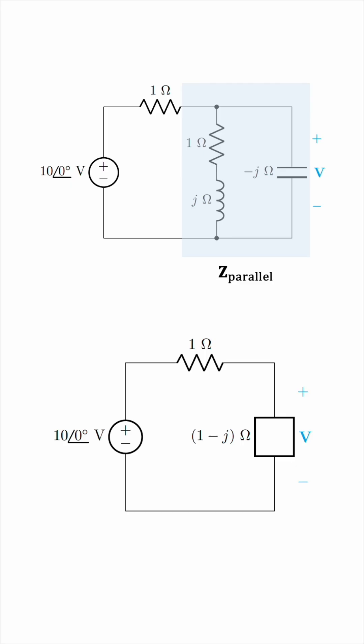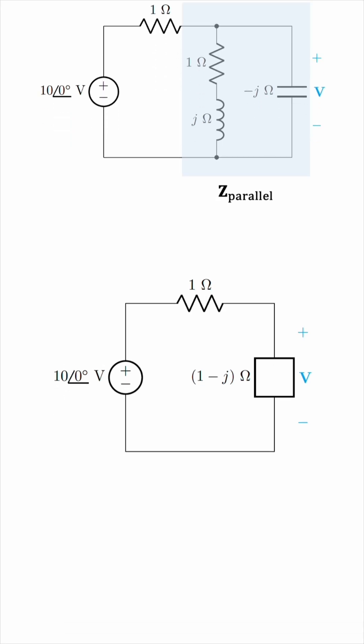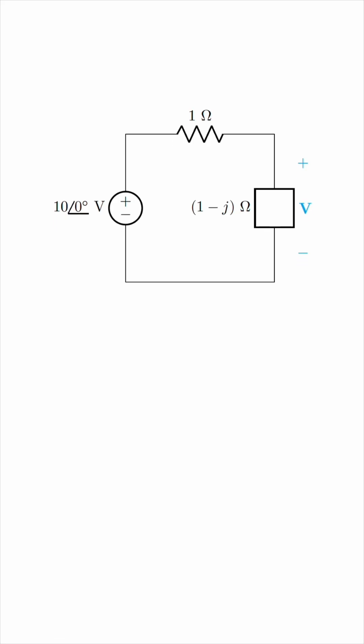Now we can find this V using a simple voltage divider. V will be the input voltage source times the impedance, which is 1 minus J, over the sum of impedances, 1 minus J plus 1. 10 phase 0 is just a real number, and the denominator simplifies into 2 minus J.